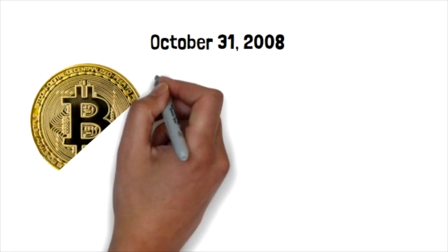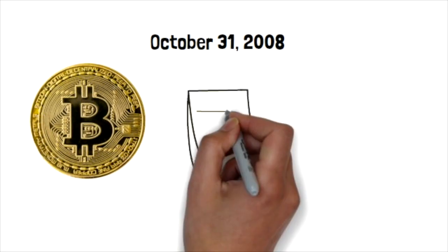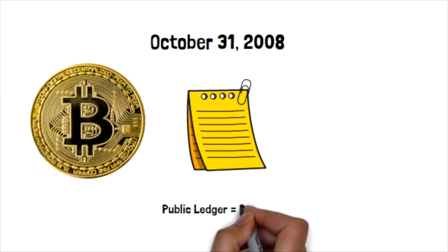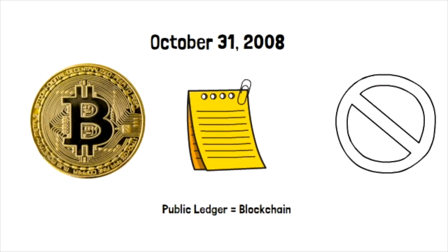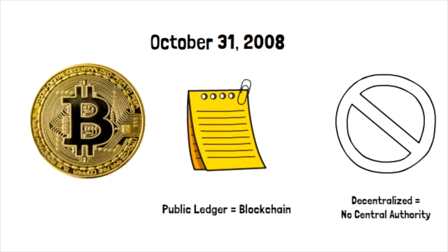On October 31st, 2008, Satoshi Nakamoto proposed Bitcoin as a decentralized digital currency. Bitcoin uses a public ledger called the blockchain to keep track of every transaction that takes place. Because of this blockchain technology, a central authority is no longer needed to verify transactions. The question then becomes, if Bitcoin was able to decentralize money, what else can we decentralize?